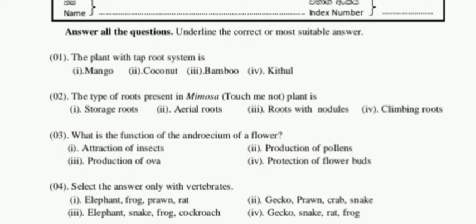Let's move to the next question. What is the function of the anther of a flower? The options are: attraction of insects, production of pollens, production of ova, and production of flower buds. We can say all anthers produce pollens, so the second answer — production of pollens — is suitable for question three.